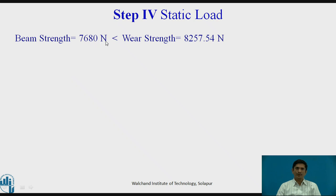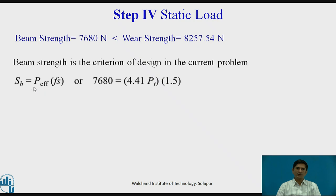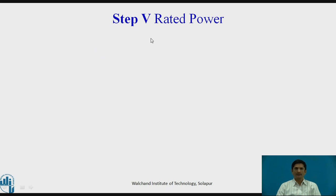Beam strength equals 7680 newton which is less than the wear strength that equals 8257.54 newton. Hence, beam strength is the criteria of design in the current problem. Remember students, you need to take the lower value of beam strength or wear strength. Sb is also equal to P effective into FS. Or, Sb equals 7680, the value of P effective we have calculated as 4.41 times Pt, FS is 1.5. From this equation, we can calculate the tangential force. Pt equals 1161.